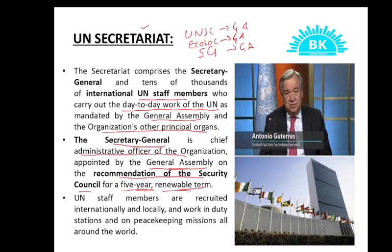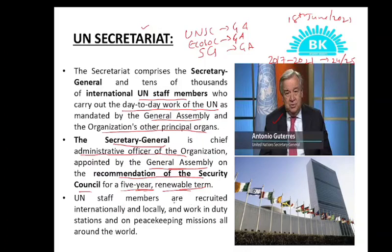The current Secretary General of the UN is Mr. Antonio Guterres. He already served for 5 years and won another term for the next 5 years. He was UN Secretary General from 2017 to 2021, and now he will be Secretary General for the next 5 years also. On 18th June 2021, he won the second term as Secretary General of the UN. UN staff members are recruited internationally and locally and work in duty stations and on peacekeeping missions all around the world. That is a brief about UN Secretariat.